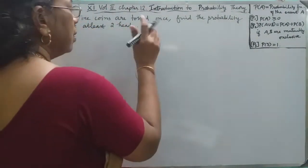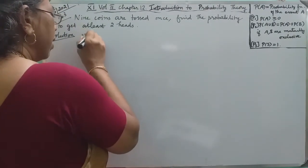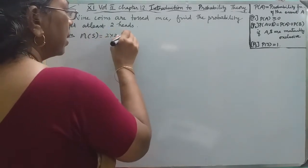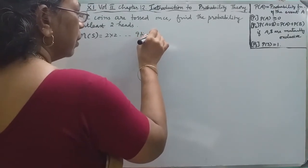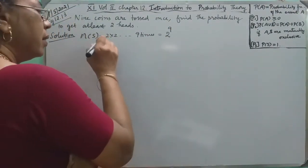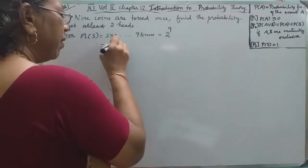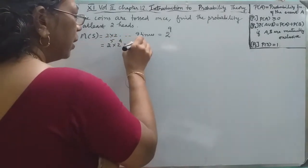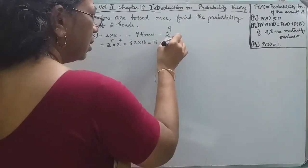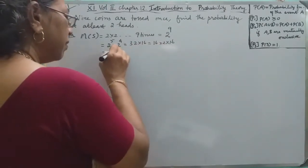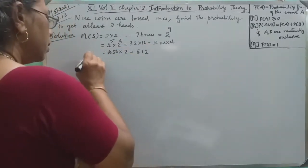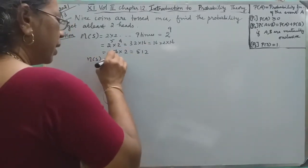So first, 9 coins are tossed. n(S) is equal to 2 power 9. This can be written as 2^5 into 2^4, which is 32 into 16. That equals 512. So n(S) equals 512.